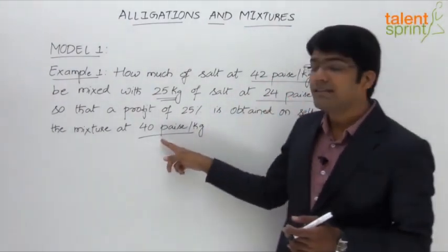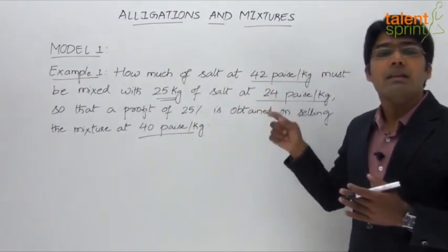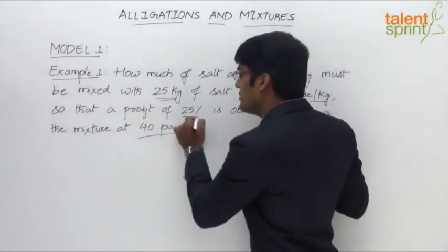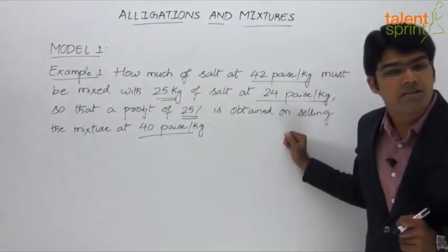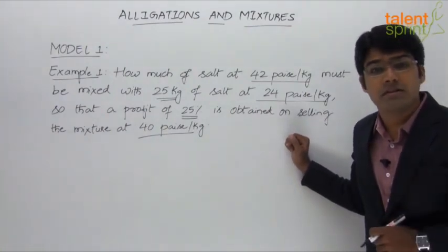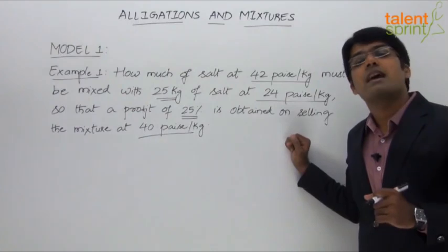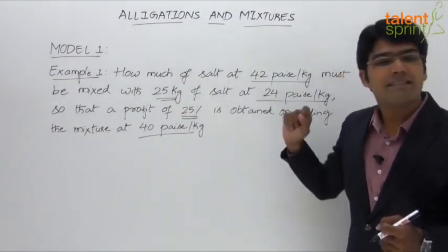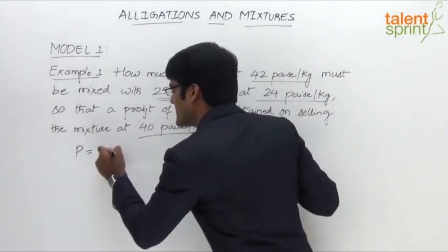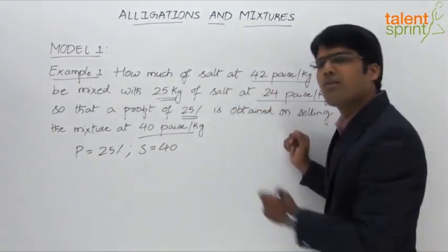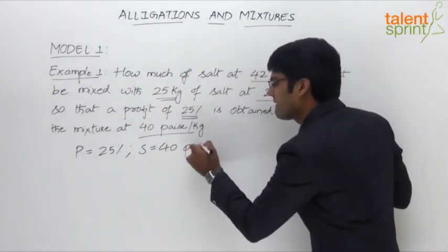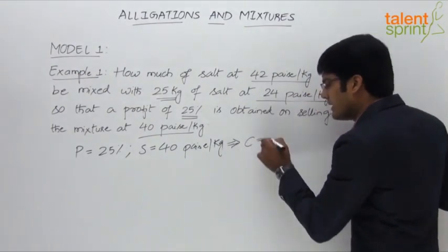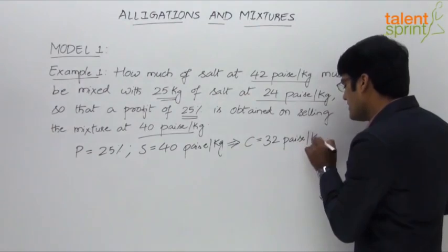Everything must be in terms of cost price. So we will first find the cost price of the mixture from the given selling price and profit. The profit is 25% and the selling price is 40 paisa per kg. If profit is 25%, the selling price is 125% of cost price. So 125% of cost price equals 40, which gives us a cost price of 32 paisa per kg.